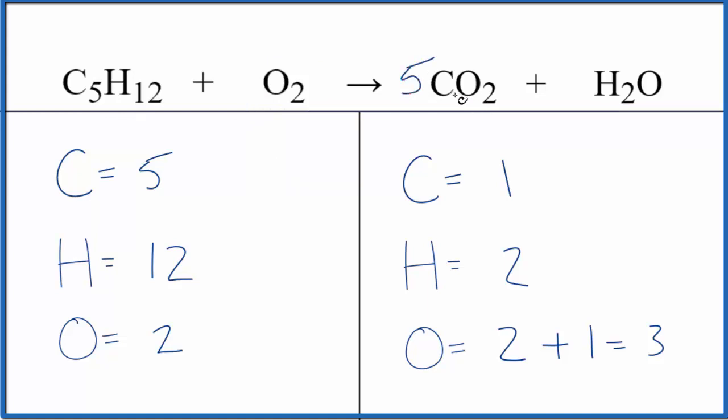Let's put a five in front of the carbon dioxide. One times five balances the carbon atoms. Now we need to update the oxygens - five times two is ten, plus the one in the water gives us eleven oxygen atoms.